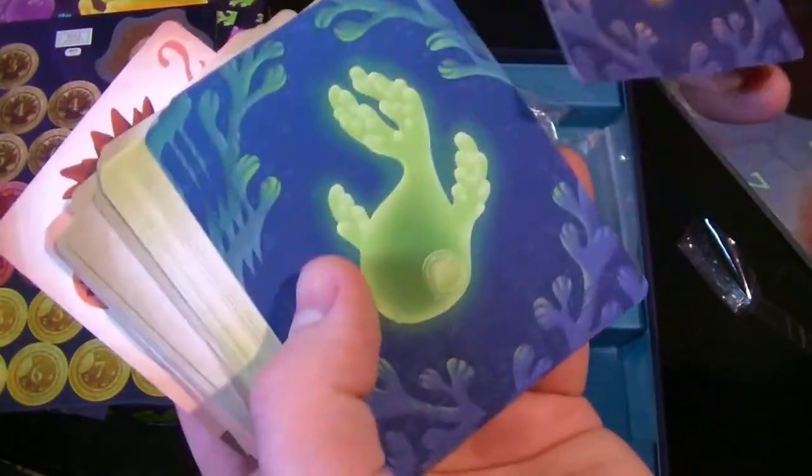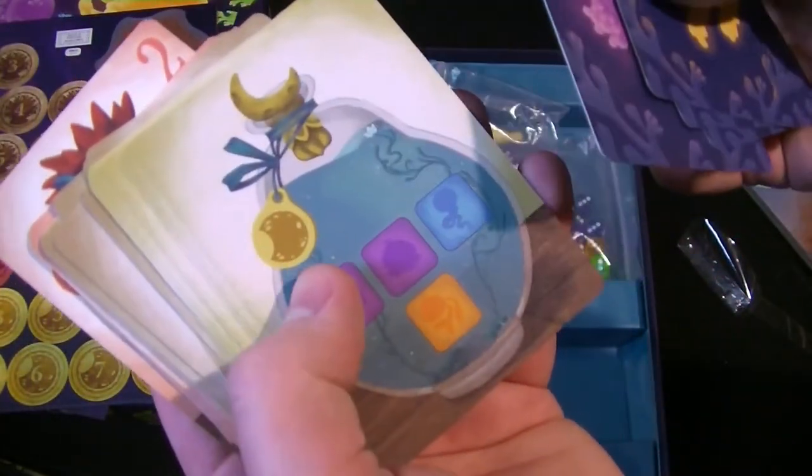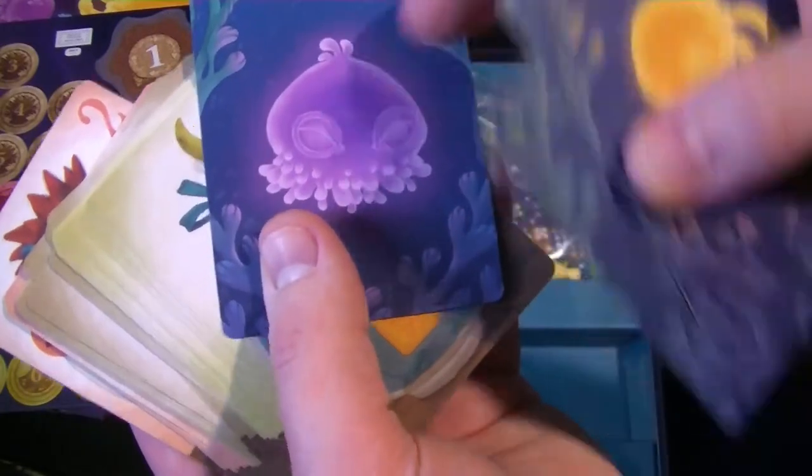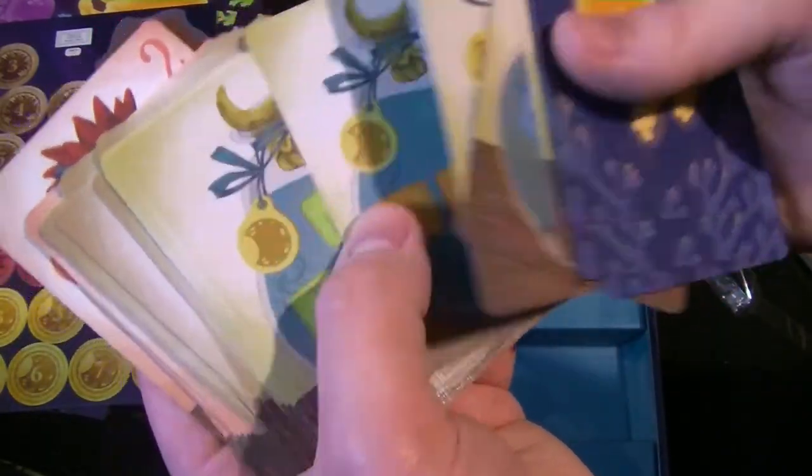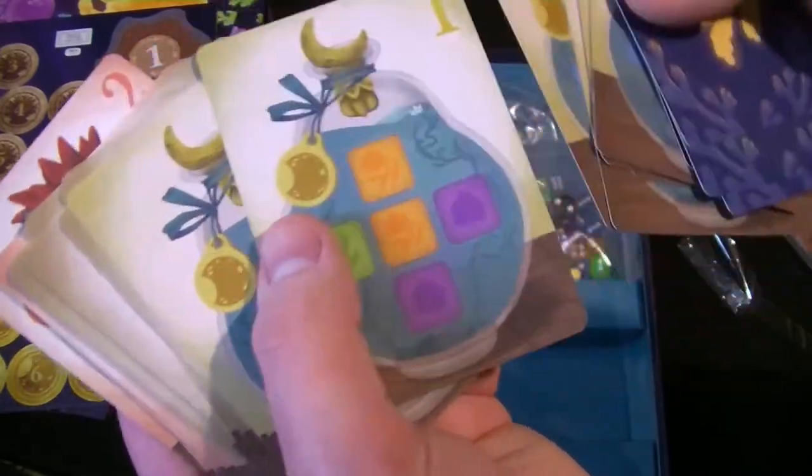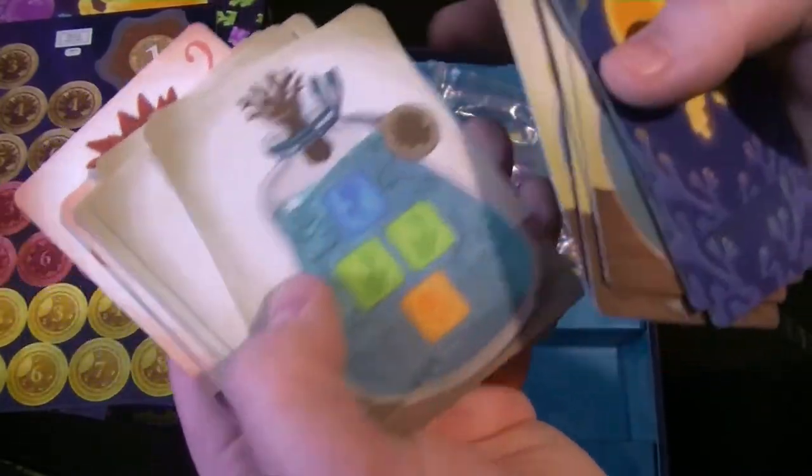These are the old Noctiluca. I believe they're called that, otherwise I'm looking stupid. I think these are the different orders that you'll be completing throughout the game.